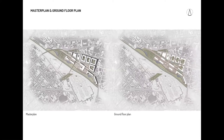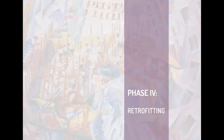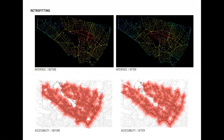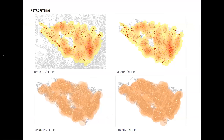With the help of the previous process, I developed a master plan. Then I move to the last phase, which is the retrofit. In a nutshell, I redid what I did in the first phase and evaluated the performance of the new system to see if it's better and if it matches my expectations. I firstly show the before-and-after maps as a sequence: voids and types of uses, porosity, effectiveness, interface, accessibility, diversity, and proximity.